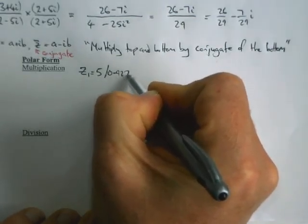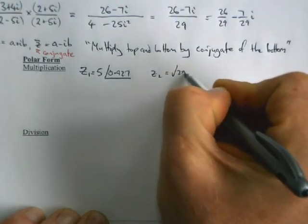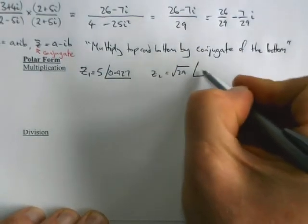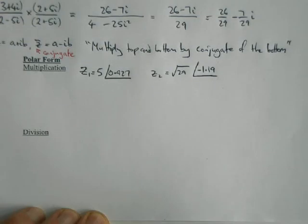So z₁ is 5∠0.927, and z₂ has got a nice negative angle in it, just to show that there's nothing to worry about there. I'm not going to do addition and subtraction in polar form.